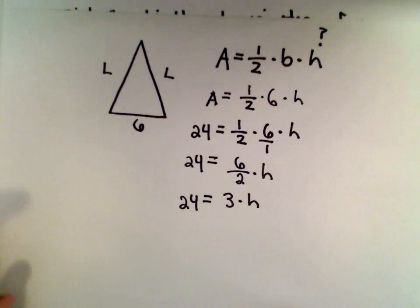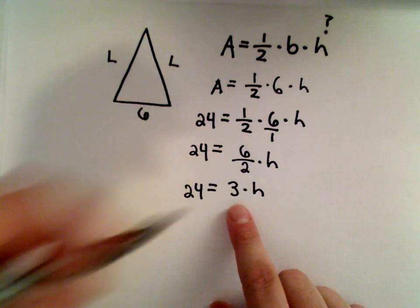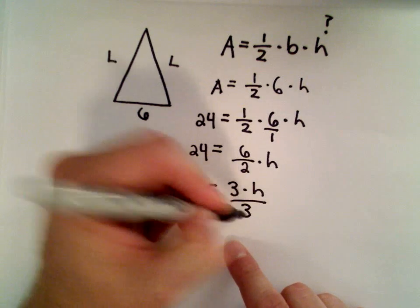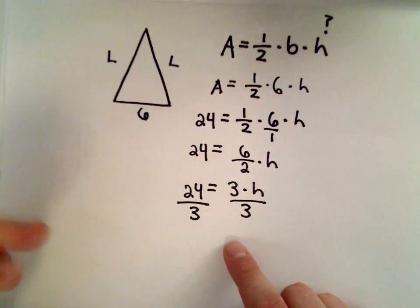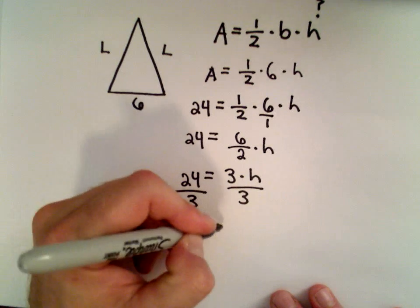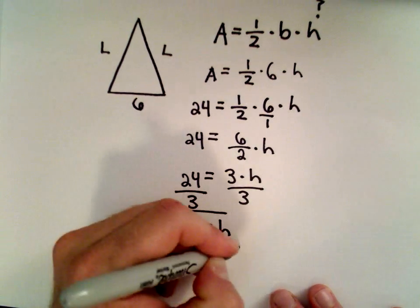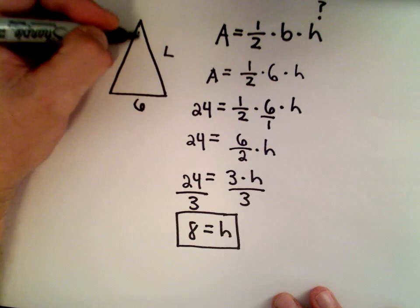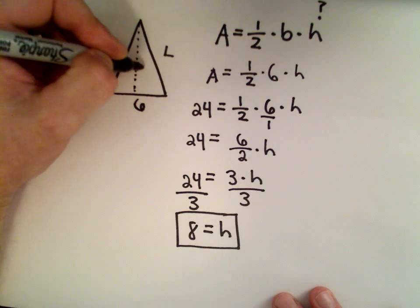So the last thing I want to do is get h all by itself. Well, since I'm multiplying by 3, I'm going to divide both sides by 3. 24 divided by 3, that's 8. So we now have the height of our triangle. We know that the height of our isosceles triangle is 8.